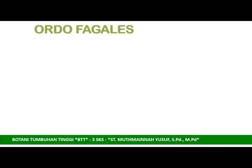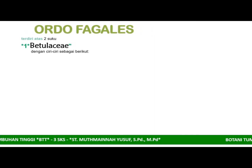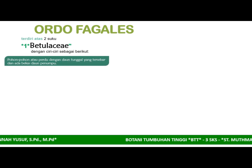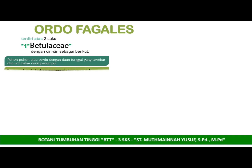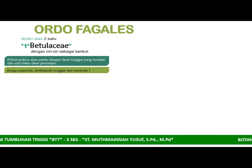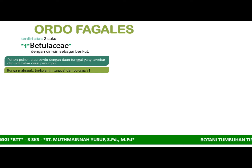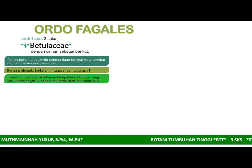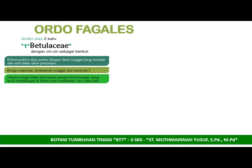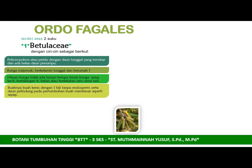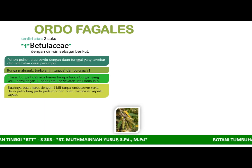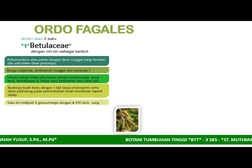Selanjutnya kita membahas tentang Ordo Fagales yang terdiri dari dua suku. Suku yang pertama adalah Betulaceae dengan ciri-ciri sebagai berikut: termasuk pohon atau perdu dengan daun tunggal yang tersebar dan ada stipula. Bunga berkelamin tunggal dan merupakan tumbuhan berumah dua. Hiasan bunga tidak ada, hanya berupa tenda bunga yang kecil dengan berbilangan kelipatan 4, bebas dan berlekatan. Buahnya merupakan buah keras dengan satu biji tanpa endosperm, serta ada involukrum pada pertumbuhan buah yang membesar.